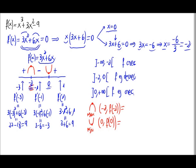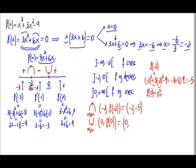Now we just have to calculate f(-2) and f(0). f(-2) = (-2)³ + 3(-2)² - 9 = -8 + 12 - 9 = -5. So the maximum point is (-2, -5). For f(0): 0³ + 3(0)² - 9 = -9. So the relative minimum of the function is (0, -9).